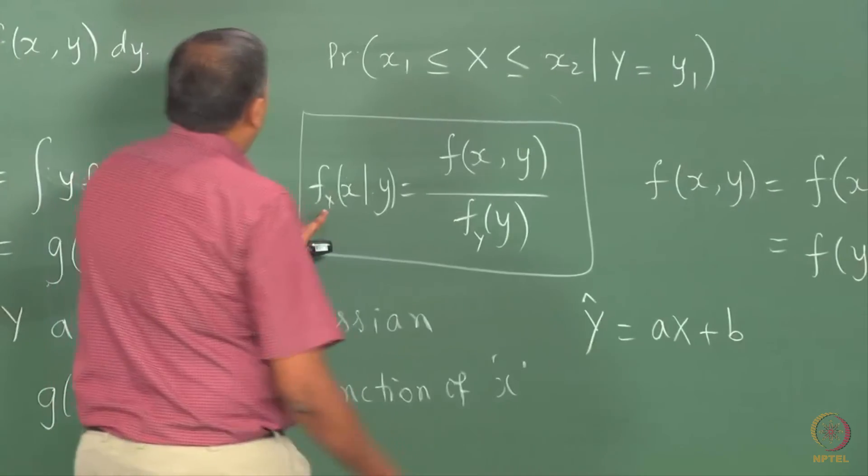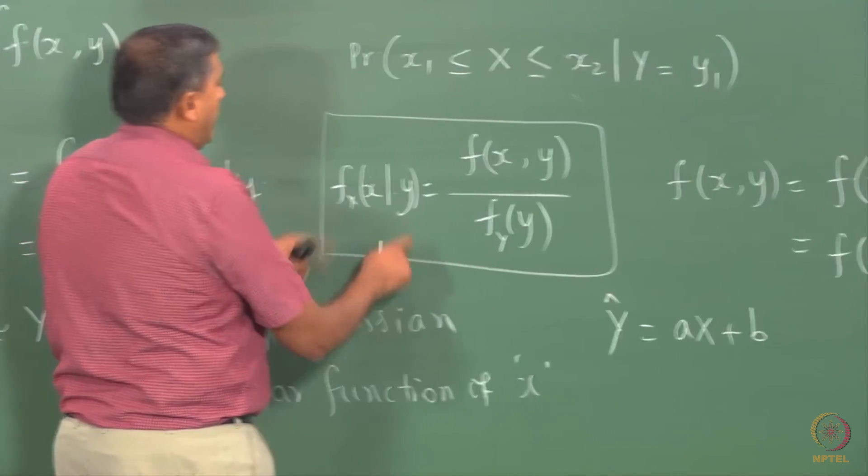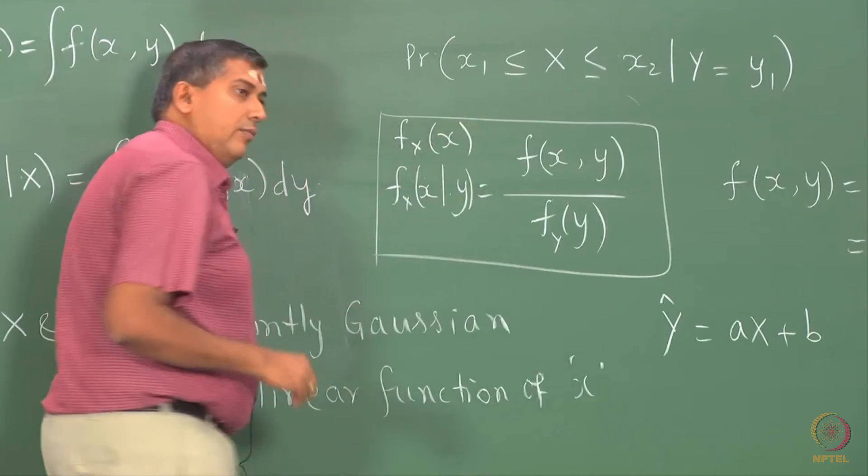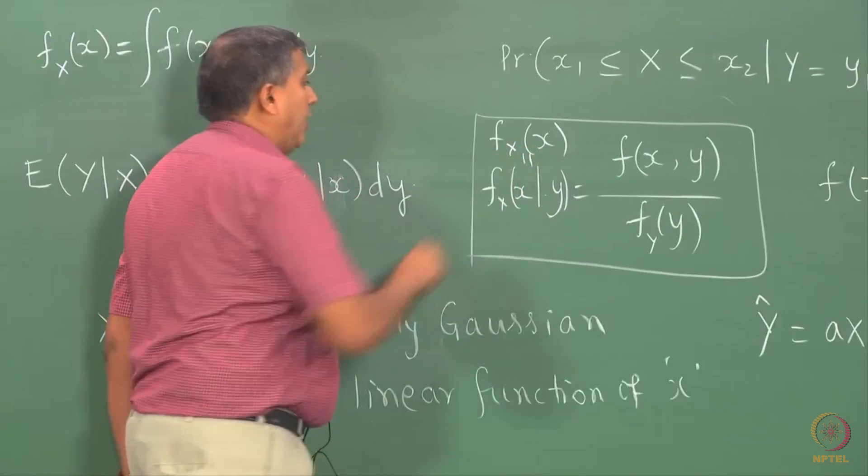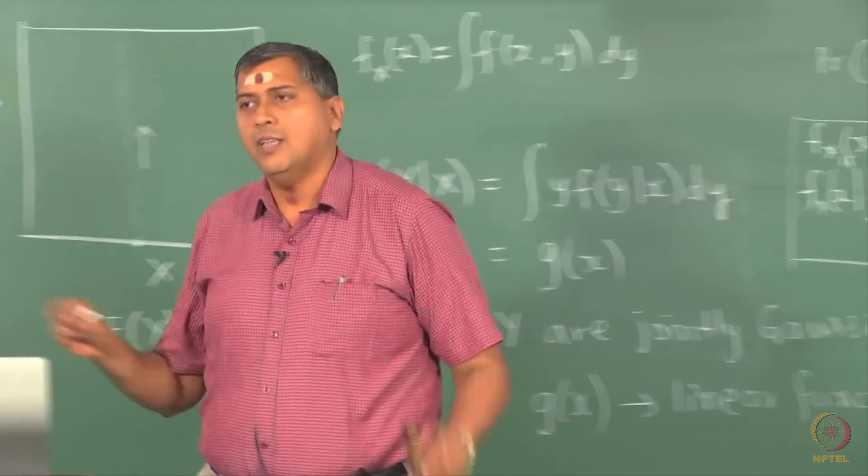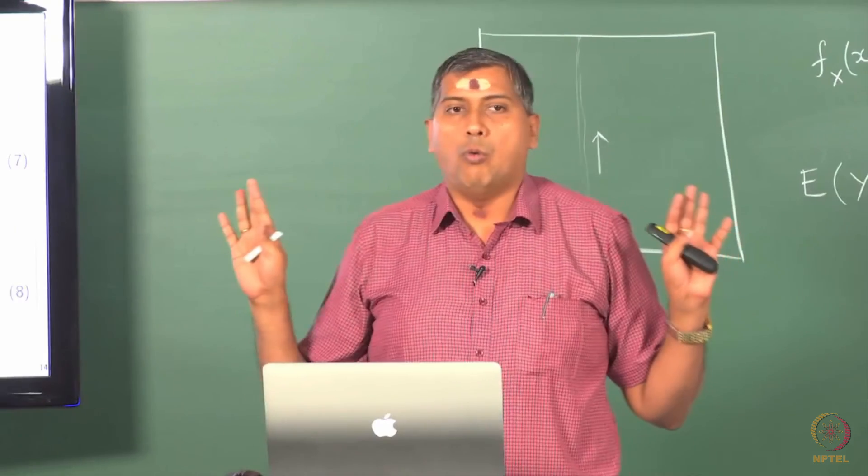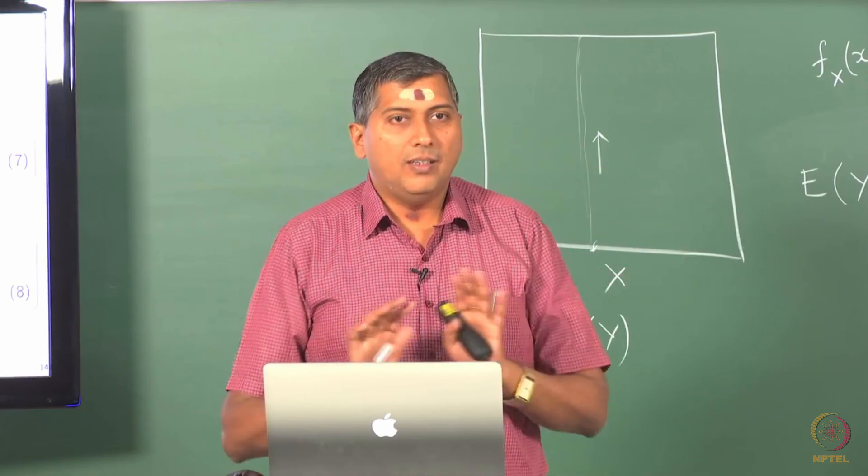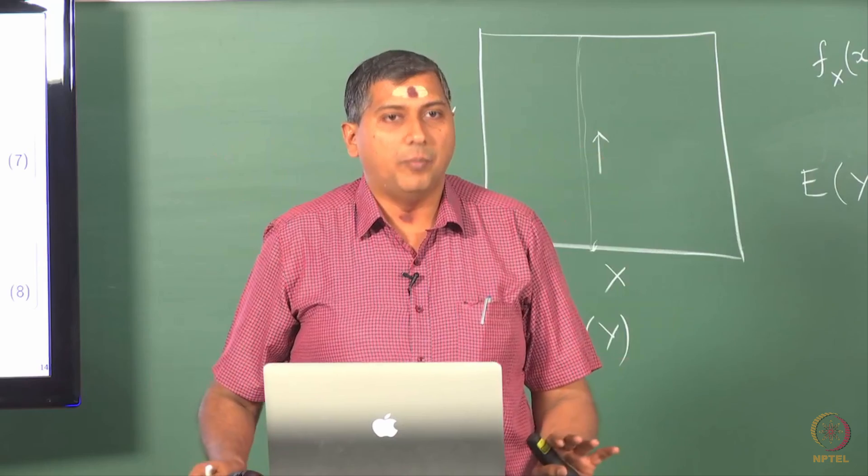You look at it this way here. Fx of x given y is the same as Fx of x. When this is equal, we say they are independent. That means it does not matter what has occurred in the y domain. The marginal density remains unperturbed.